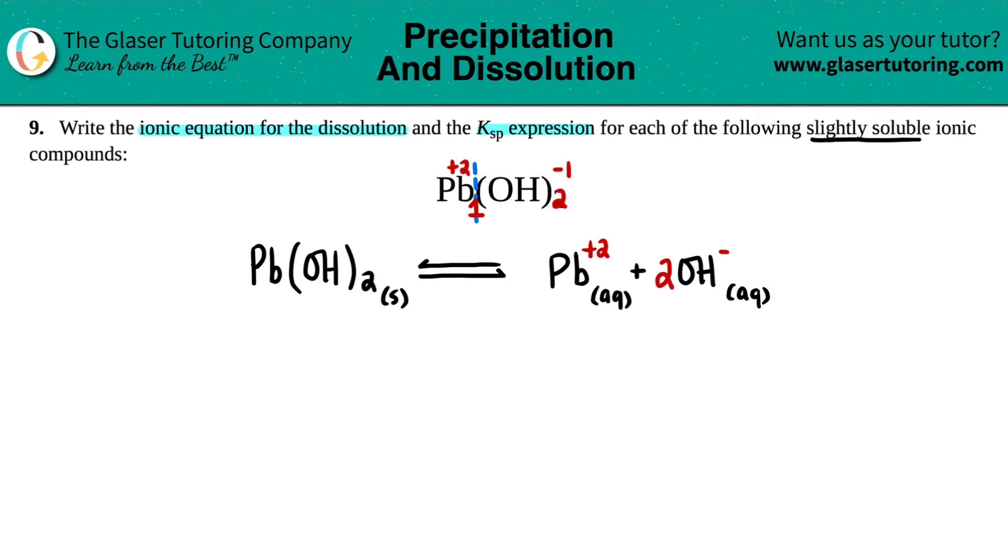Ksp expression is pretty easy. It's this formula right here. Ksp is just equal to the products raised to the coefficients. Why isn't it divided by the reactants? Well, because the reactants is a solid. Remember, no solids or liquids allowed for any K expression.